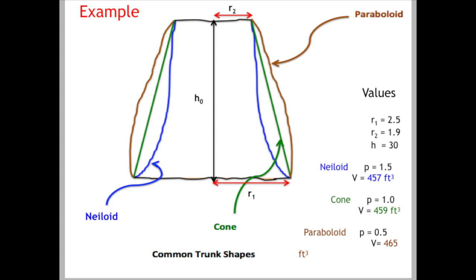Here's an example: suppose the lower radius is 2.5 feet, the upper radius is 1.9 feet, and the height of the section is 30 feet. If the trunk tapers in a neiloid form, p = 1.5, the formula gives a volume of 457 cubic feet. If it were a cone with linear sides, p = 1, you get a somewhat different number. The blue lines are inside the green lines, and the green lines are inside the brown lines — so the paraboloid has the most volume. One forestry method treats most lower trunks as a paraboloid.